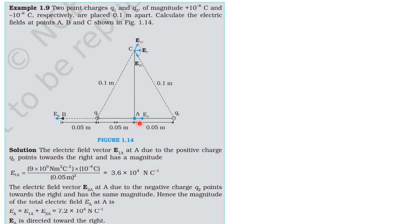Using the principle of superposition, the electric field at a point due to a group of charges is the vector sum of the individual fields. For a positive charge the field points radially outward; for a negative charge the field points radially inward. At point A, the field due to the positive charge points right and due to the negative charge also points right. At point B, the field due to the positive charge points left and due to the negative charge points right. At point C, fields are directed along the line joining the point and each charge.